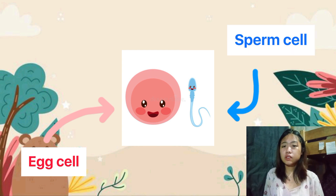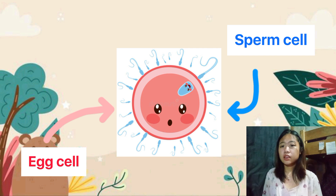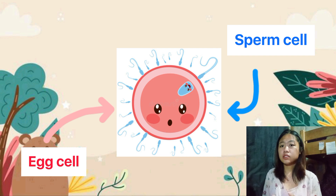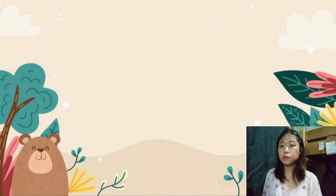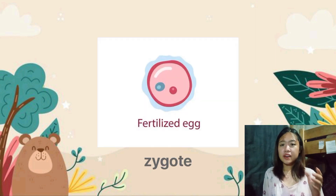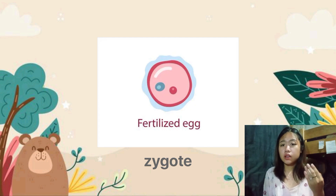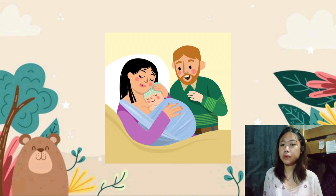If these two cells unite, or if the sperm cell meets the egg cell, it will fertilize the egg cell. When the egg cell is already fertilized, a new organism or cell will be reproduced and will develop into a zygote. After months of developing this fertilized egg cell, after nine months, a baby will come out from the mother's womb.